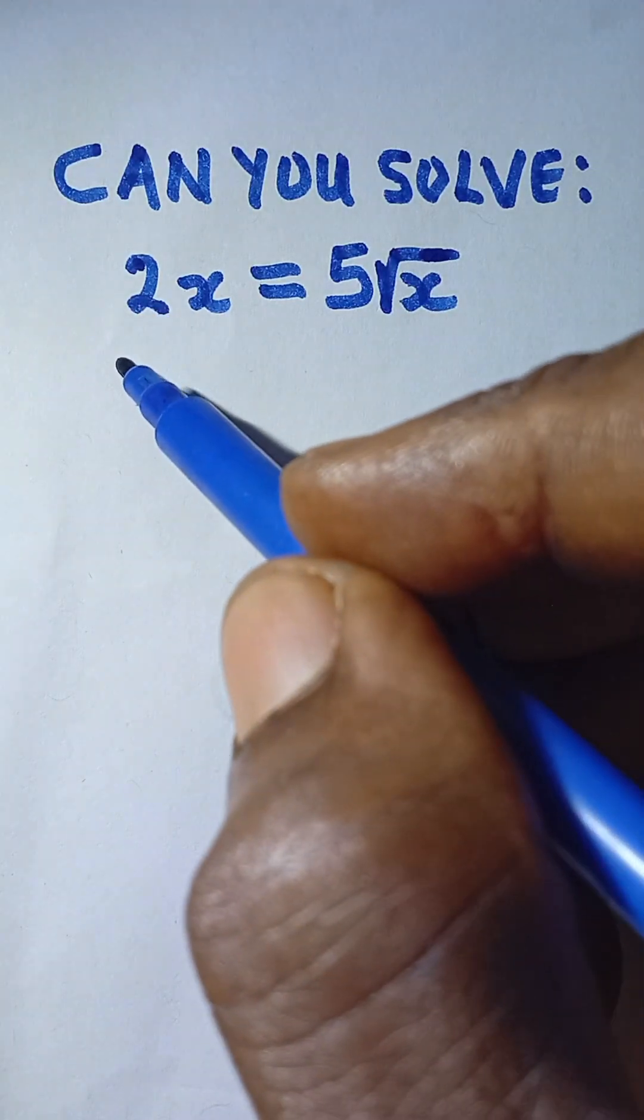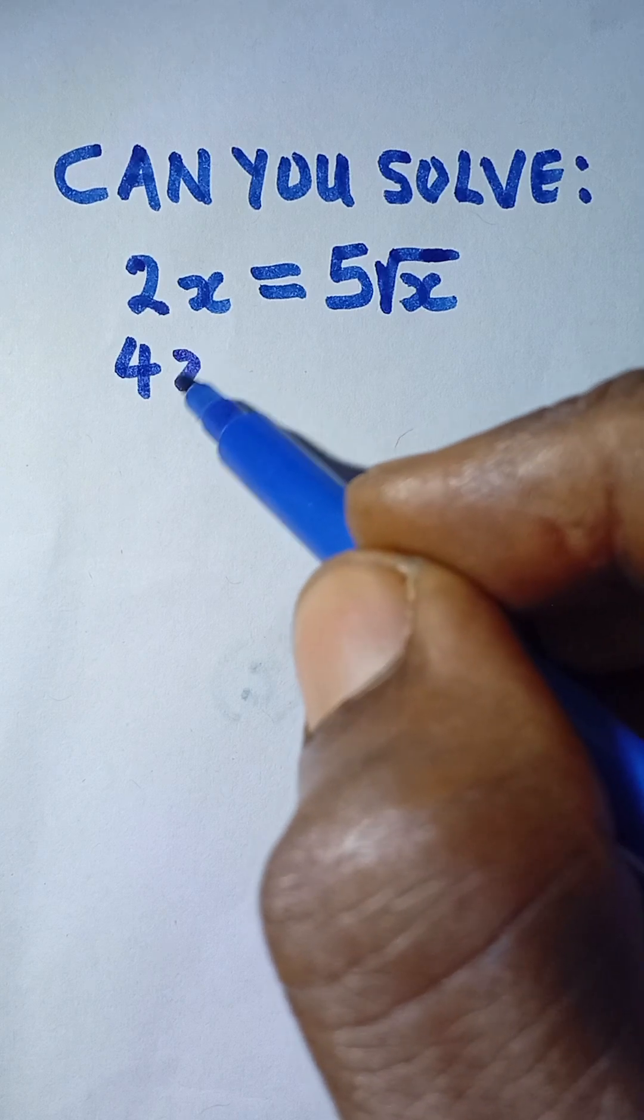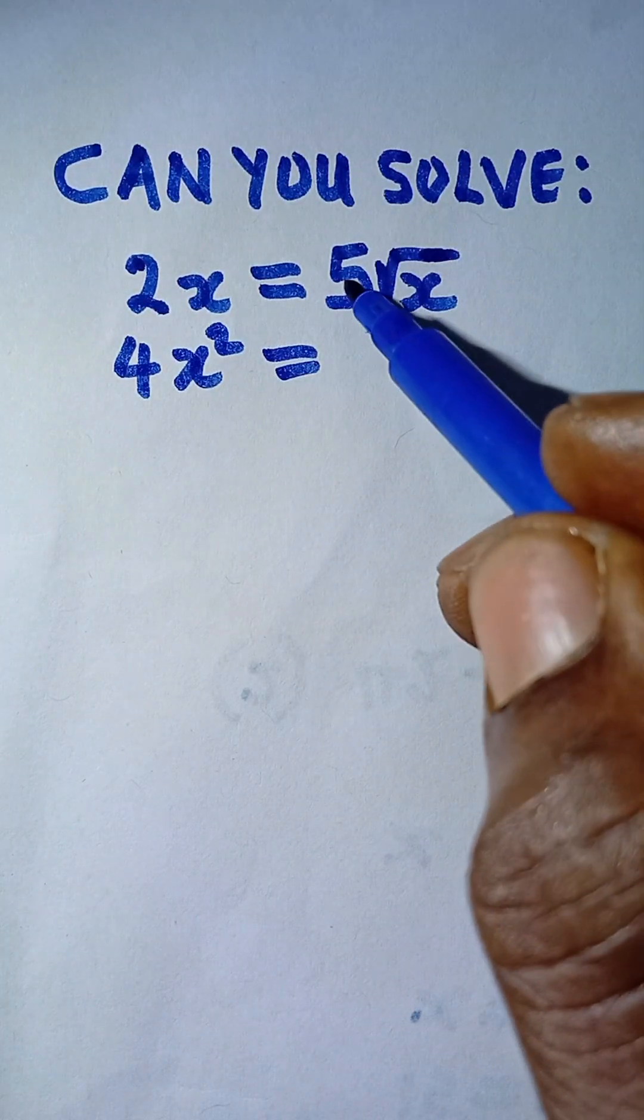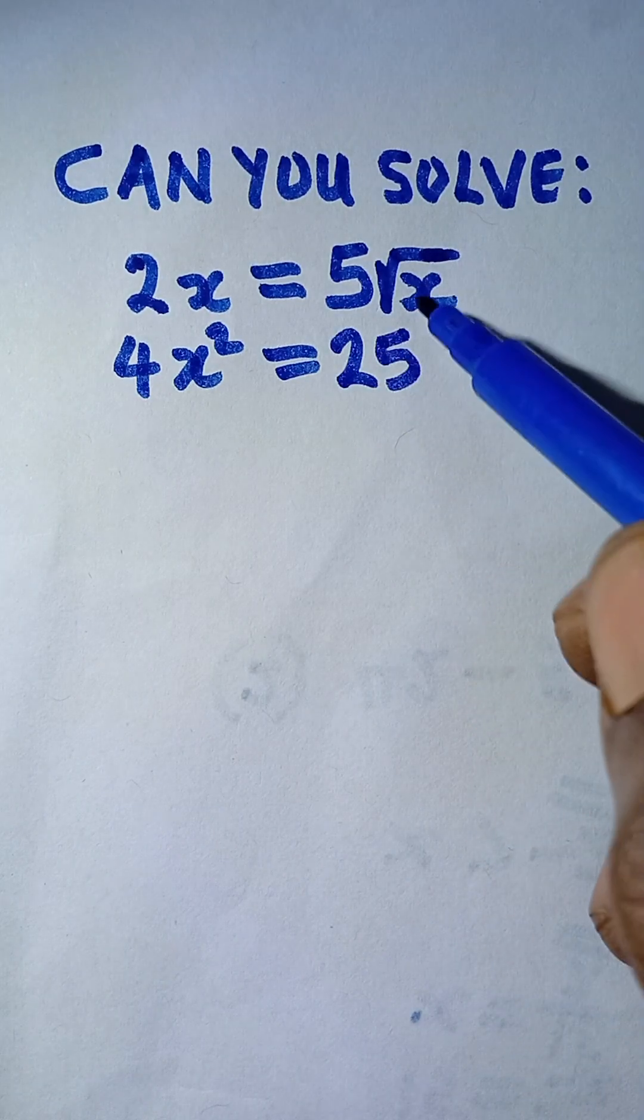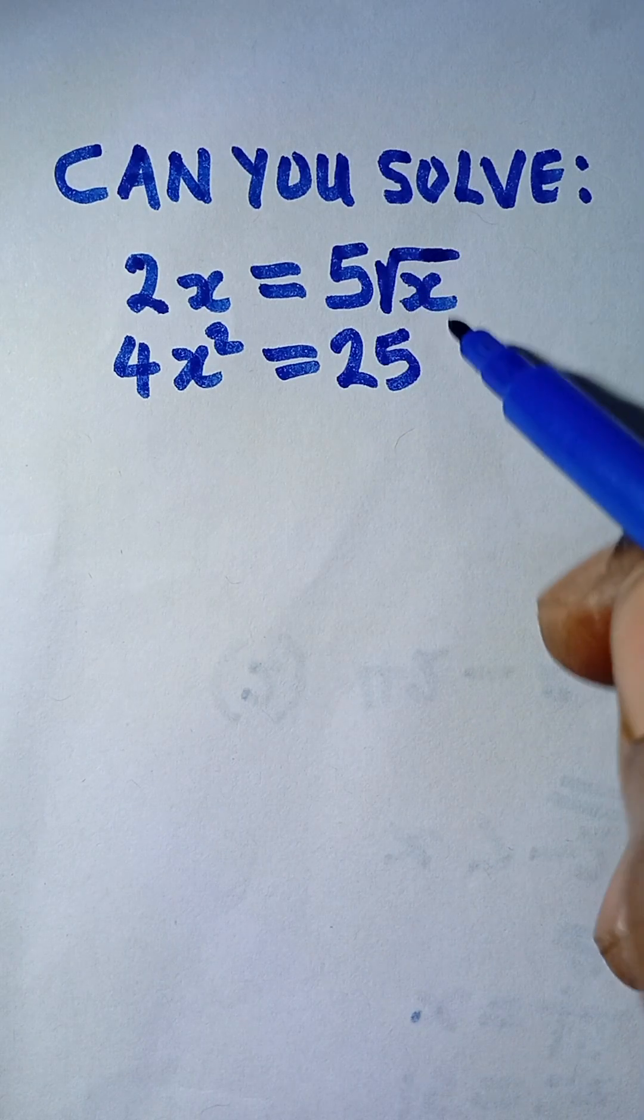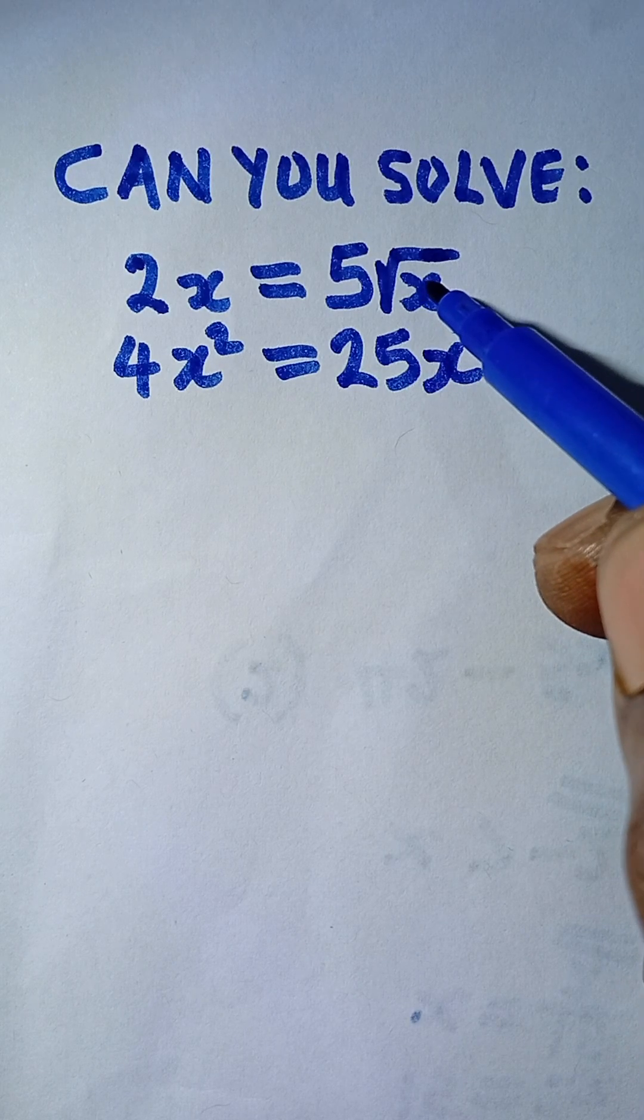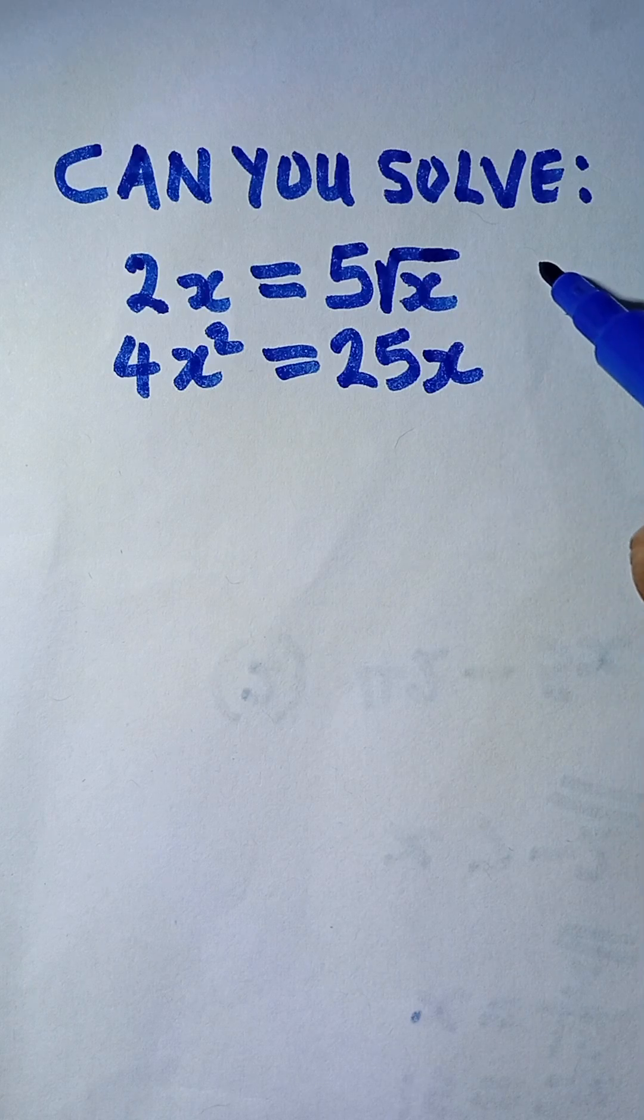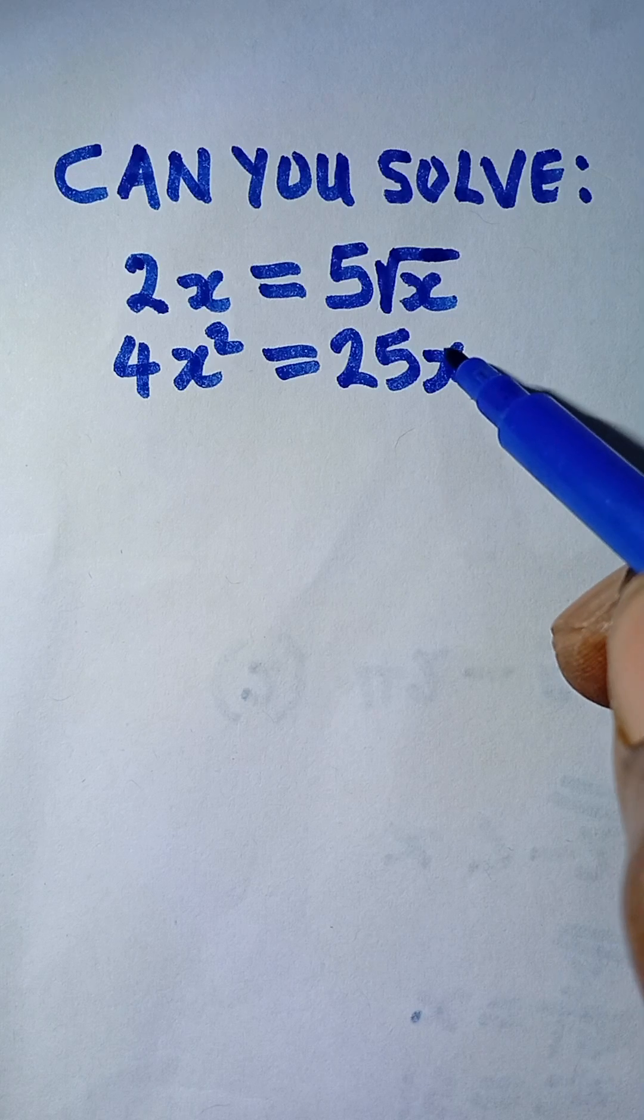If I square 2, it gives me 4. If I square x, it gives me x squared. Then I also square the right hand side. If I square 5, it gives me 25, and if I square root x, it gives me x. Don't forget, to square root x means root x times root x. Root x times root x will give you x - that is what is inside the root sign.